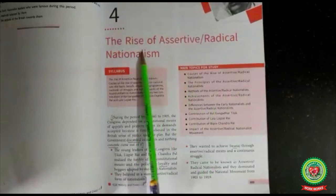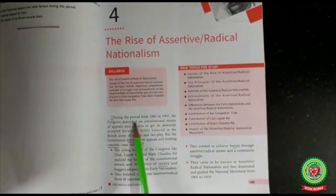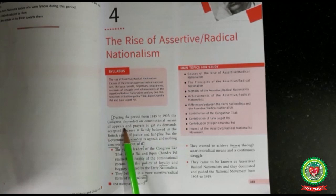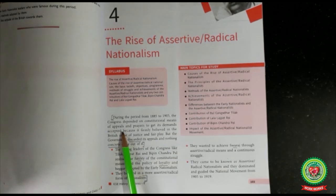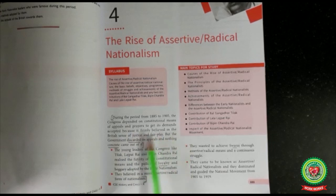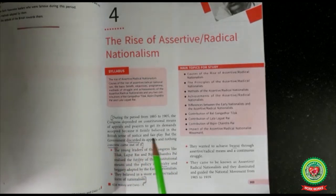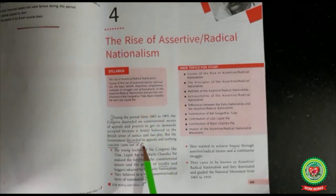Lesson four: Rise of assertive radical nationalism. During the period of 1885 to 1905, the Congress depended on constitutional means of appeals and prayers to get their demands accepted, since they were against violent methods. They firmly believed in the British sense of justice and fair play. But the government discarded its appeals and nothing concrete came out of it — the government paid no attention, and no solid or productive result emerged, so they had to change the mode of their struggle.